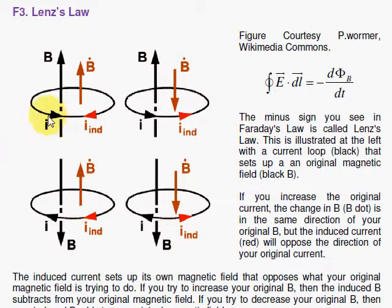If this black current is increasing, then we have to oppose it by moving against it this way. If it's decreasing, we say you can't decrease, we've got to keep you going.